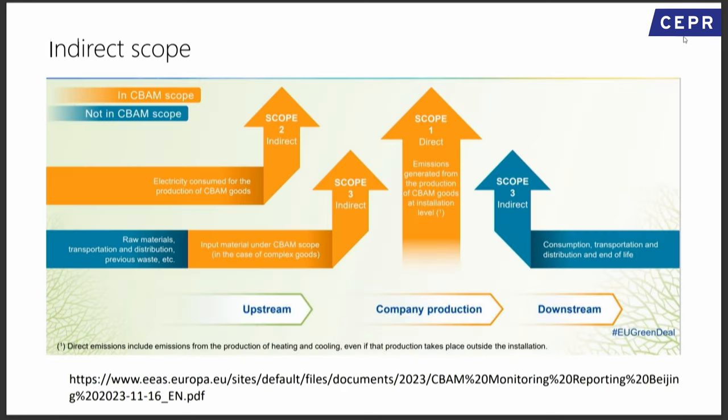Regarding scope one (direct emissions) and scope two (indirect emissions from electricity): the direct emissions from steel production are straightforward. Indirect emissions from electricity are trickier. Scope three — input materials — includes upstream but not downstream. So the steel in a car isn't paying. That's a problem: a car can be made somewhere else and the steel and aluminum in it won't pay. The scope may be expanded after the phase-one review, potentially to other ETS sectors and hopefully to scope three in the supply chain.